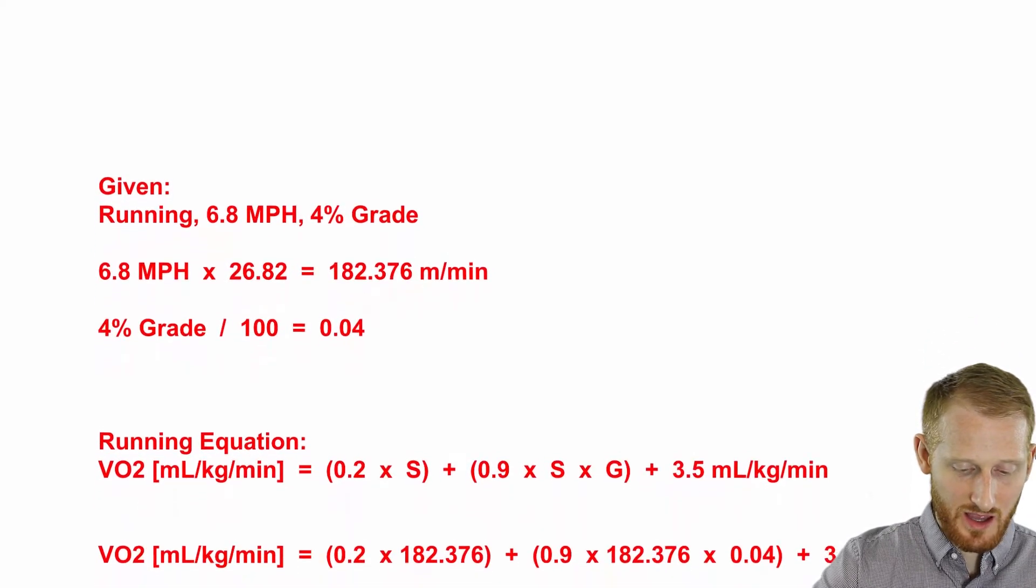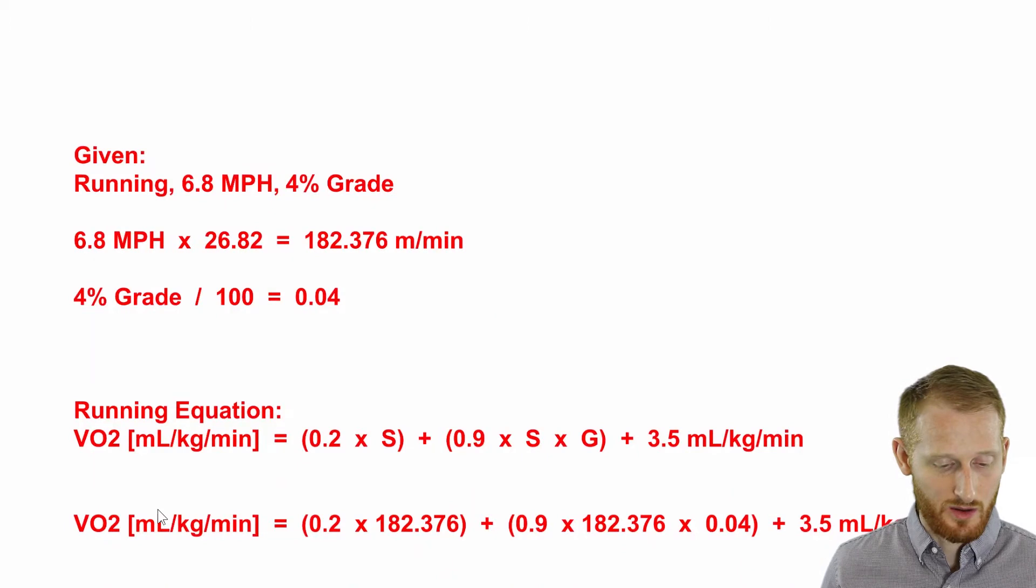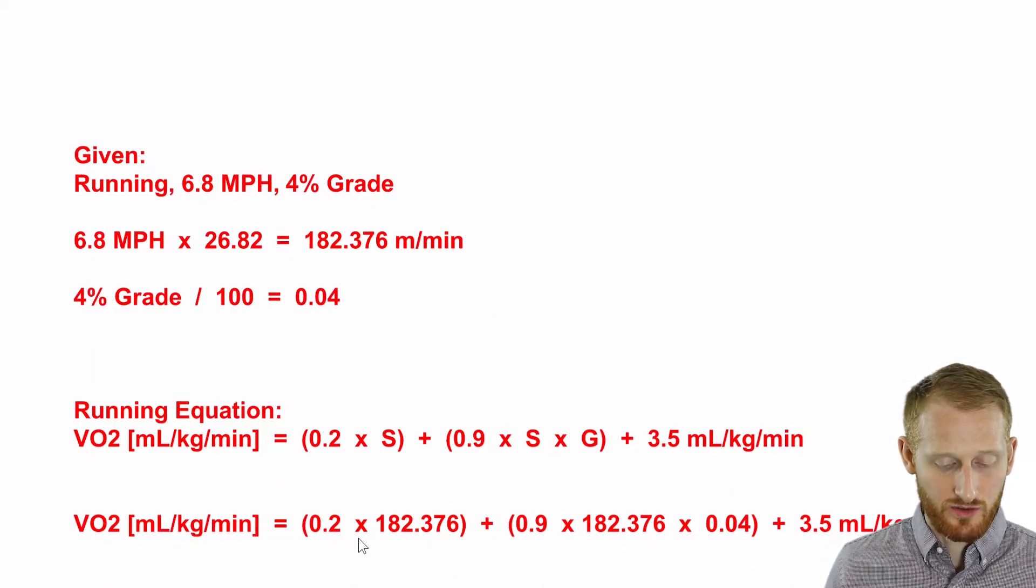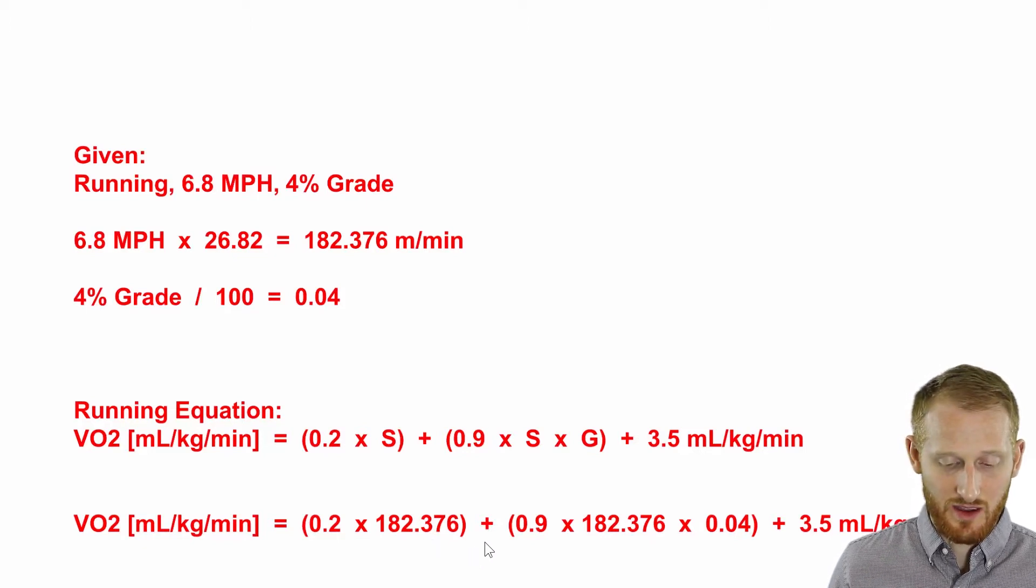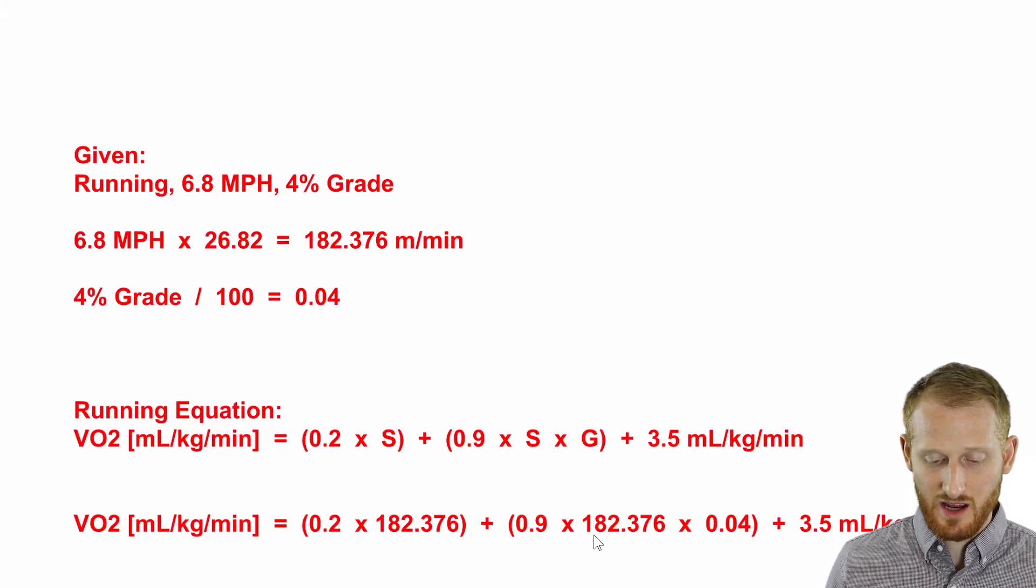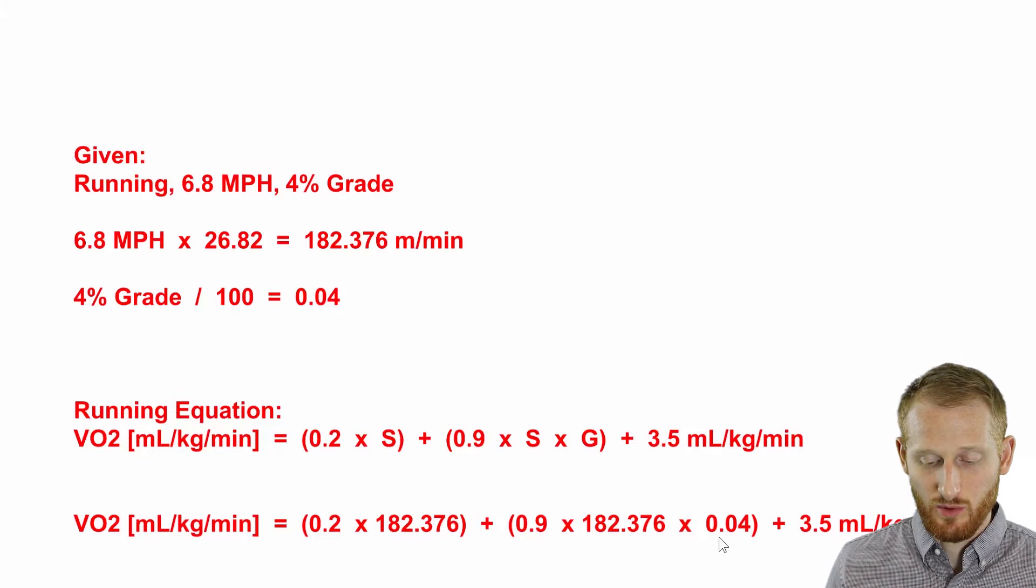So let's go ahead and plug our values in here. So we end up with oxygen consumption is equal to 0.2 times 182.376. And then in another set of parentheses, we're going to add 0.9 times 182.376 times 0.04,